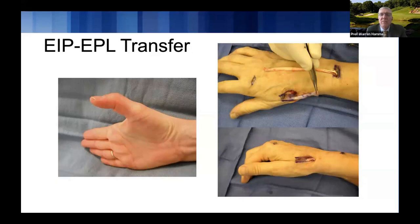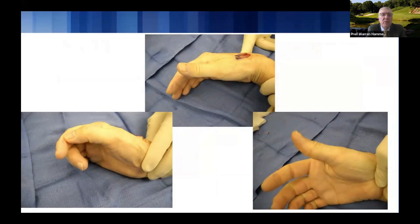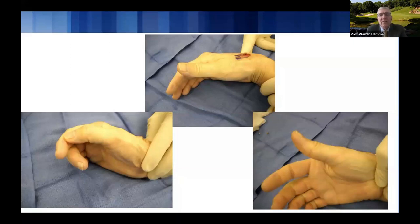After the tenorrhaphy is done over the base of the metacarpal, we use tenodesis motion to check the tension. With the wrist in neutral, the thumb should be pretty much extended. As we bring the wrist into flexion, the EPL becomes tighter, and you can see a little bit of hyperextension at the IP joint. As the wrist comes back, the thumb starts to flex. That's the tension you want if operating with the patient asleep. Alternatively, doing this wide awake under local anesthesia lets the patient actively move and helps set tension most optimally.